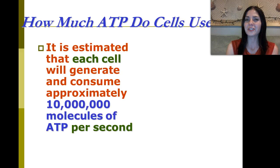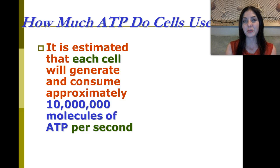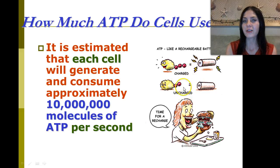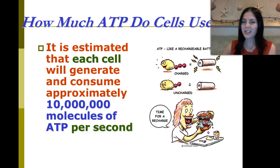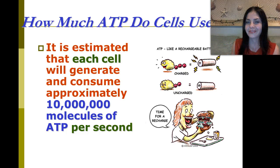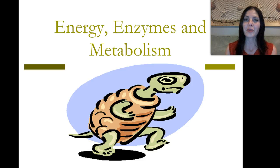Each cell will generate and consume approximately 10 million molecules of ATP per second — that's a lot of energy. Just like a battery, our ATP is charged when it's phosphorylated, and gets uncharged when that high-energy phosphate bond is broken, so eventually we need to recharge our bodies. That's why I was thinking maybe I needed an energy drink to recharge me — but I don't really know if this has ATP. Stay tuned for part two of our lecture on energy, enzymes, and metabolism.